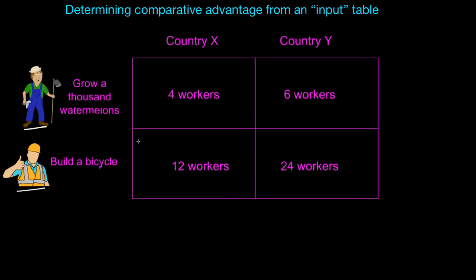In this video we're going to look at how to calculate opportunity cost and determine who has a comparative advantage in two goods production using the information from what we call an input table. Notice that in this table we are given not the number of units of output that the two countries can produce — rather we are given the number of workers needed to produce a single unit of output. The variable in this table is the number of inputs needed to produce a thousand watermelons or a single bicycle. With this information we can calculate the opportunity costs of watermelons and bicycles in these two countries and determine who has the comparative advantage.